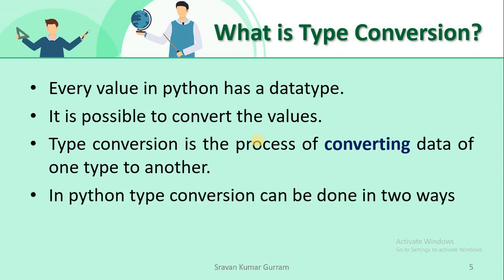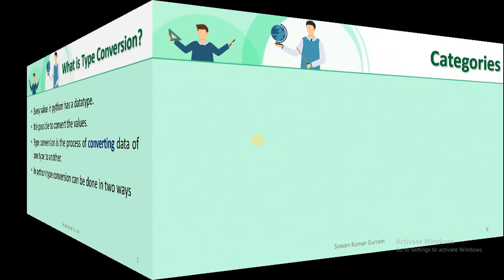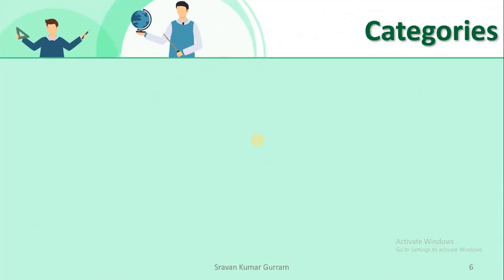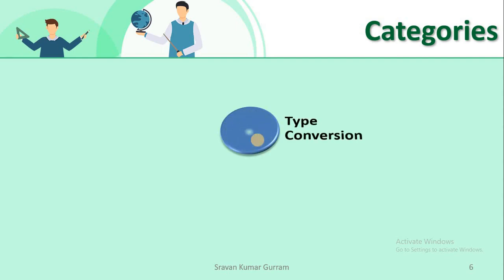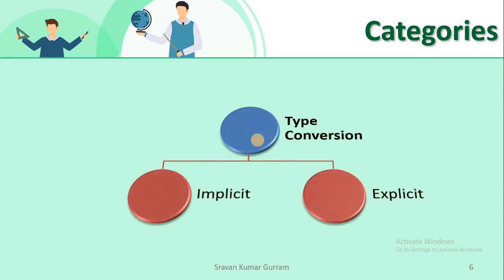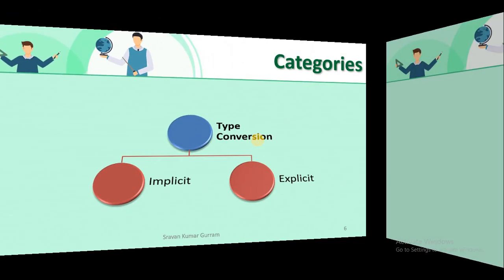In Python, type conversion can be done in two ways. The first type is implicit type conversion, and the second one is explicit type conversion.